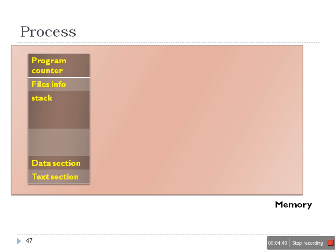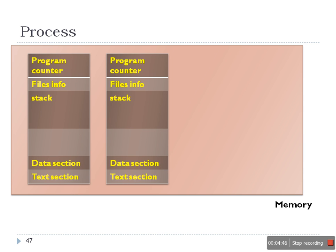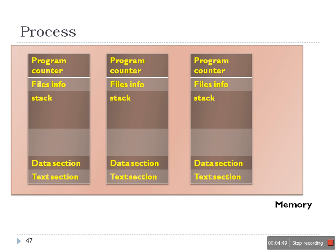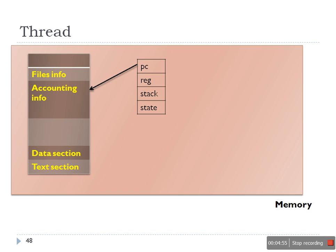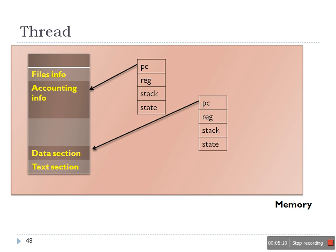If we look at the size required by a process versus a thread — when we start one program, that's one process; another program is another process — every process needs to store a lot of information. A thread requires only a small piece of information. This is the reason why a thread is known as a lightweight process. So the difference is: in multi-processing we create multiple processes each with a single thread, while in multi-threading there is only one process with more than one thread.